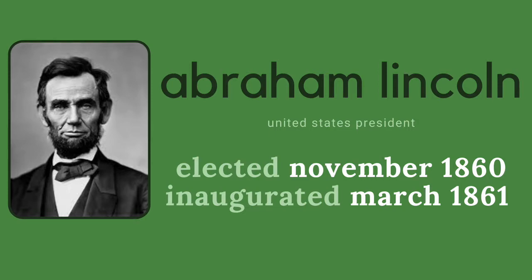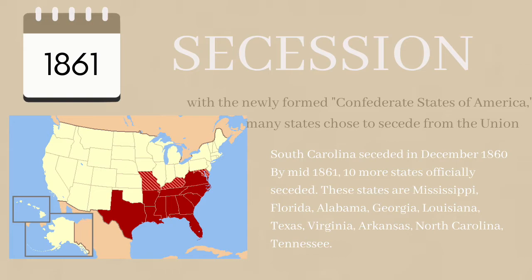Moving on to 1861. There was intense separation in political and economic views between the North and South during the time Lincoln began his presidency. Eventually, the Confederate States of America were formed. South Carolina became the first state to officially secede from the Union on December 20, 1860. Over the course of six months, ten more states seceded. Abraham Lincoln was inaugurated on March 4, 1861. Nearly one month later, on April 12, 1861, the Civil War began.